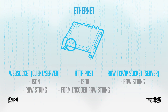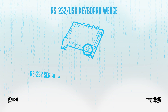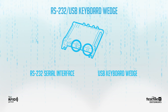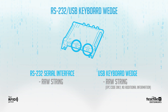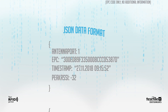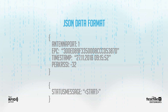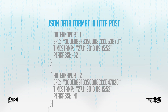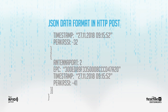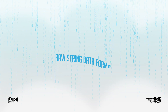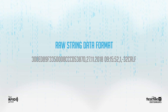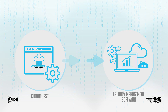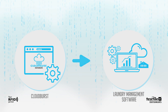For each protocol, you can choose between different data formats. Over the RS-232 serial interface and the USB keyboard wedge, the raw string data format is available. This is how a JSON message looks like, this is the JSON message encapsulated in an HTTP POST message, and finally this is how a raw string looks like.